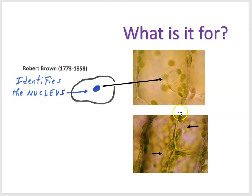Here we see several leaf cells stuck together because plants are multicellular, and we see the nucleus indicated at these locations. Of course, nobody at the time understood what the nucleus was for — that would have to be discovered later on.